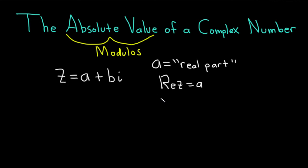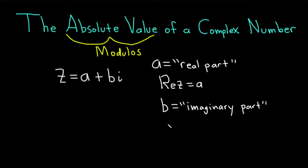And b is called the imaginary part of the complex number. You could denote that with the notation Im(z), and in this case that would be b. Just some extra knowledge.